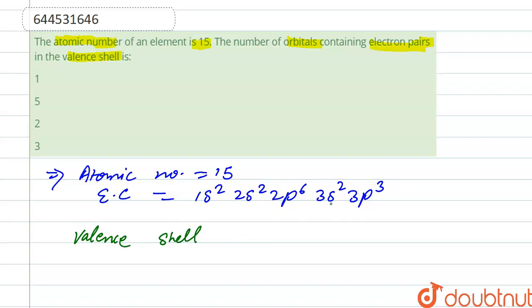Right, so here the valence shell is 3s. This is a valence shell orbital. So the valence shell is 3s in which two electrons are present, and 3p.